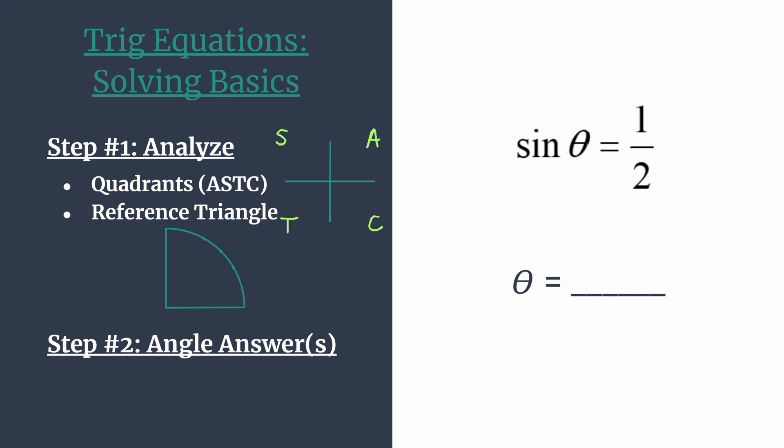This tells us which trig functions are positive in each quadrant. So the A stands for all in quadrant one, they're all positive. In quadrant two, it's sine and its reciprocal cosecant, those are positive, the rest are negative. Quadrant three, tangent and cotangent are positive. And in quadrant four, that C tells us cosine and its reciprocal secant are positive.